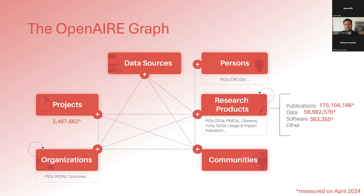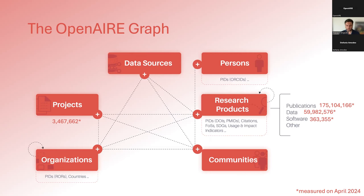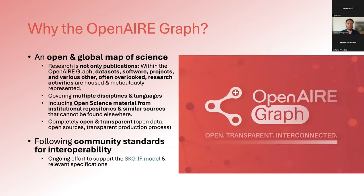Based on authorship connections, researchers are linked to research products and other entities. We have data sources someone could use to get this type of metadata, organizations with identifiers and other metadata like countries, and communities — where research groups participating in research infrastructure or a particular project or domain can create their own community and connect research products and grants to that community.